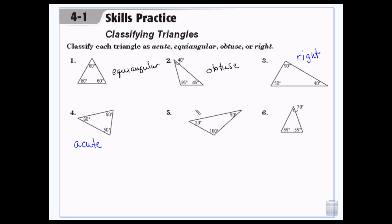Number five and six — why don't you guys try those on your own real quick? Did everybody get obtuse and acute? Good.